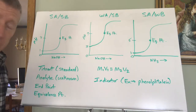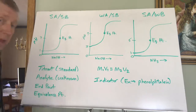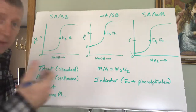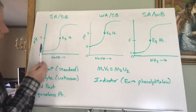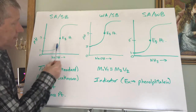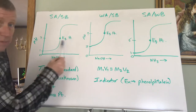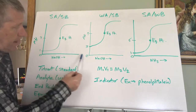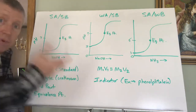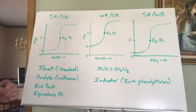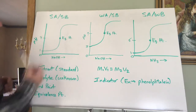The equivalence point for a strong acid and strong base should be exactly at pH 7 — that is a neutral solution, because the strong acid and strong base have fully neutralized each other. Below the equivalence point on the curve, the solution is still acidic. At the equivalence point, pH = 7. Then as you continue adding base, the pH rises into the basic range. That is the titration curve for a strong acid and strong base.